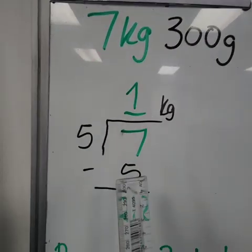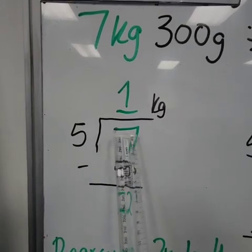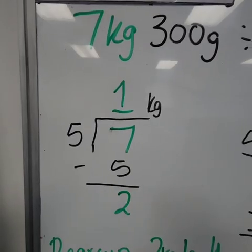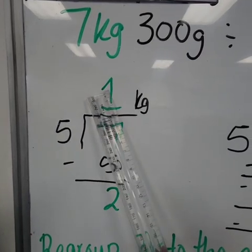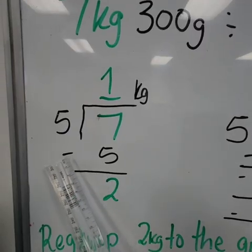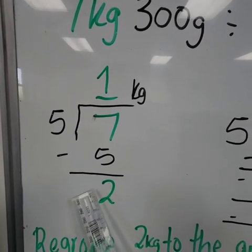So we will start by saying 7 divided by 5. So 7 divided by 5 is equal to 1. After dividing, we multiply 5 times 1, which will give us this 5. Then after multiplication, we subtract. We subtract 7 minus 5, which will then give us 2.